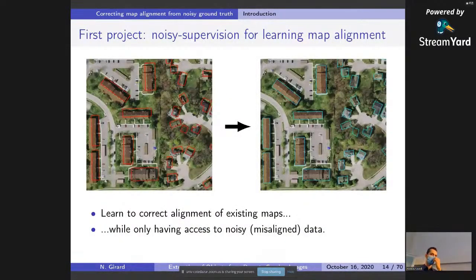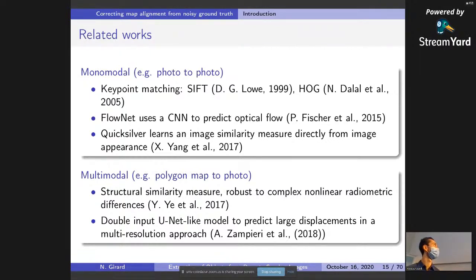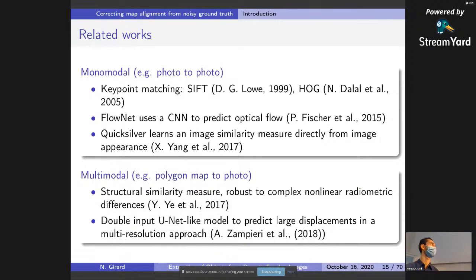Our first project is noisy supervision for learning map alignment, where we want to learn to correct alignment of existing maps while only having access to noisy or misaligned data. For related work, in the mono-modal setting we can use key point matching, or deep learning methods such as FlowNet using CNNs to predict optical flow, or Quicksilver which learns an image similarity measure. In our case, we want to align geometry in polygon form over a photo — a multi-modal setting — where we can use the structural symmetry measure. Our own work is inspired by a double-input U-Net model to predict large displacements in a multi-resolution approach.